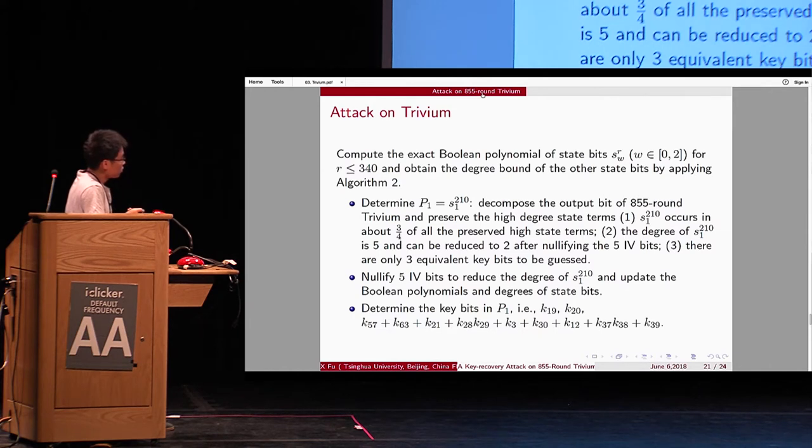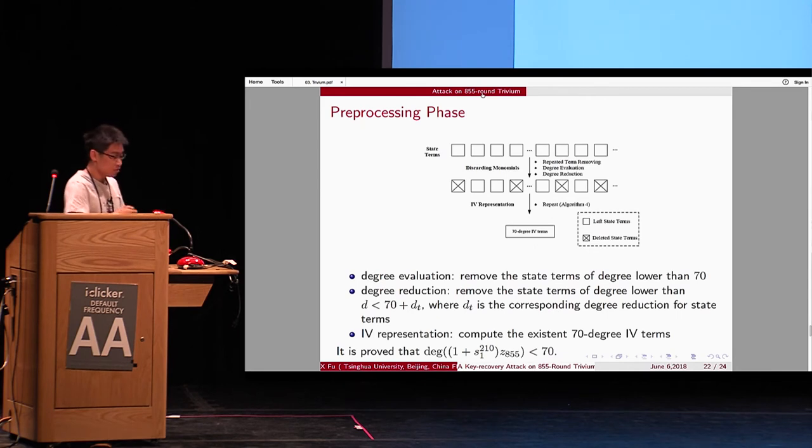And the criteria to choose s1_210, is that it occurs very frequently. And the degree of this bit is 5 and can be reduced after nullifying 5 IV bits. And there are only three equivalent k bits to be guessed. And these are the three equivalent k bits in p1. And then, during the preprocessing phase, we use degree evaluation, degree reduction, and IV representation to delete state terms whose degree is lower than 14.